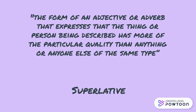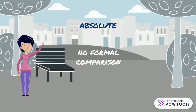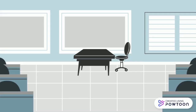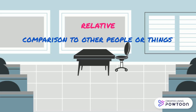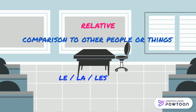The second grammatical tool is the superlative. The superlative is the form of an adjective or adverb that expresses that the thing or person being described has more of a particular quality than anything or anyone else of the same type — in other words, the person or thing is the best or the worst. The superlative can be absolute, with no formal comparison, in which case the adverb 'très' (very) precedes the adjective — for instance, 'Lola est très grande'. Or the superlative can be relative, with a comparison to other people or things. To form the relative superlative in French, we use: le/la/l' + plus + adjective + de, meaning 'the most + adjective + in', or le/la/l' + moins, meaning 'the least'.